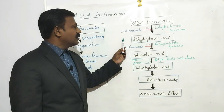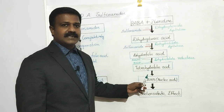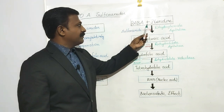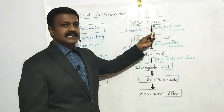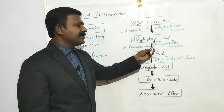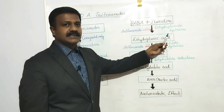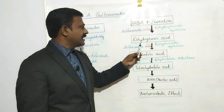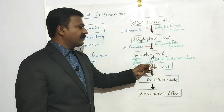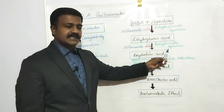Now, how do they act? Generally, bacteria synthesize folic acid from PABA. PABA combined with pteridine, a cofactor, leads to dihydropteroic acid in the presence of the enzyme dihydropteroate synthetase. Then dihydropteroic acid is converted into dihydrofolic acid in the presence of the enzyme dihydrofolate synthetase.